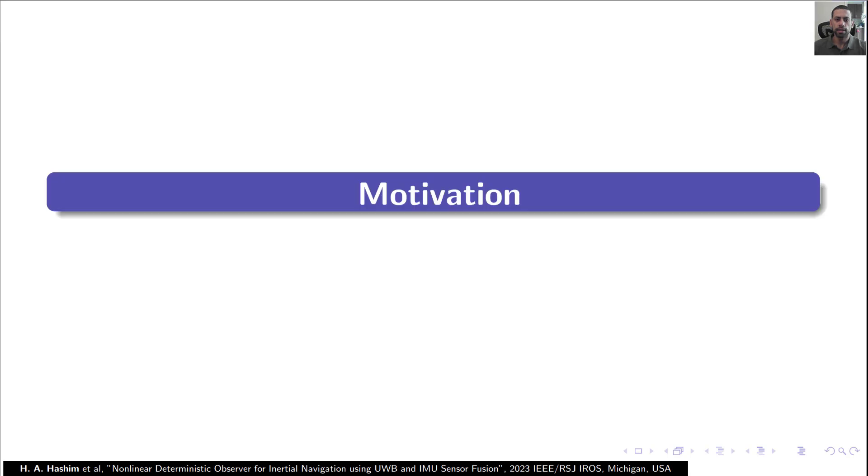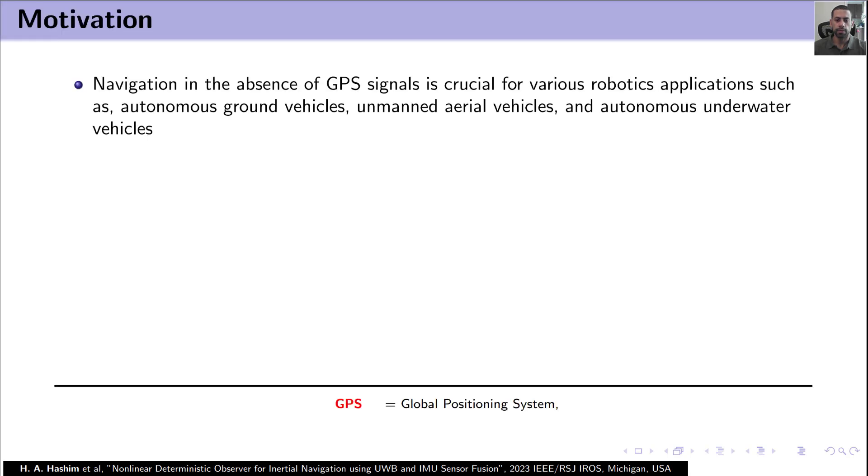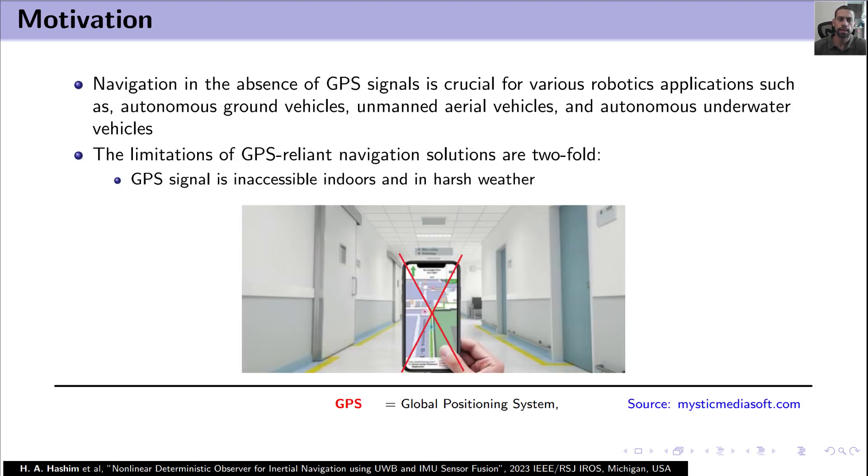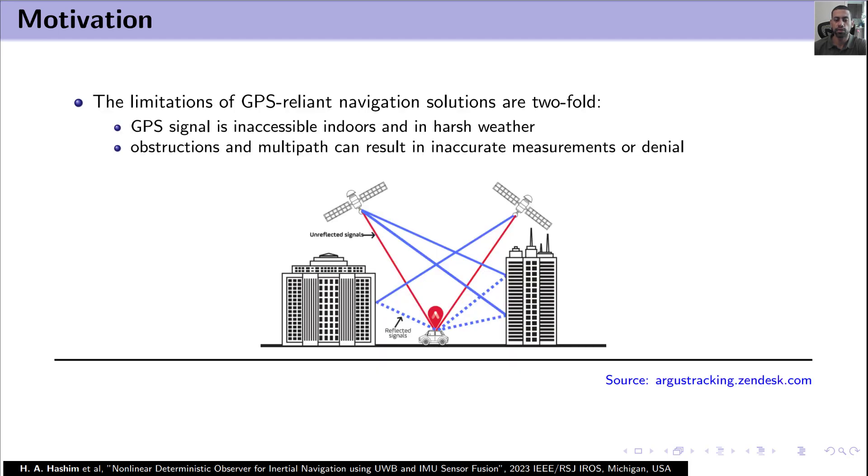Navigation in GPS denied regions is very important for ground vehicles, unmanned aerial vehicles, and autonomous underwater vehicles. Majority of the existing navigation solutions require GPS signal. GPS is unavailable in indoor missions. Also, the other problem is that obstructions and multipath can lead to inaccurate measurements or signal denial.